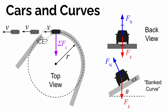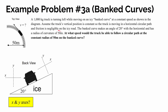Let's look at a specific quantitative problem. A 1,000-kilogram truck is turning left while moving on an icy banked curve at a constant speed. Assume the truck's vertical position is constant — it's not moving up or down, maintaining the same height. So the truck is moving on a horizontal circular path, and friction is negligible on this icy road. The banked curve makes an angle of 20 degrees with the horizontal and has a radius of curvature of 50 meters. At what speed would the truck follow a circular path at the constant radius of 50 meters?